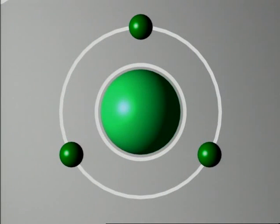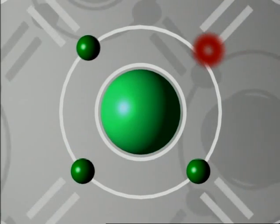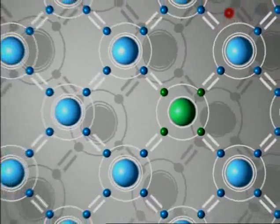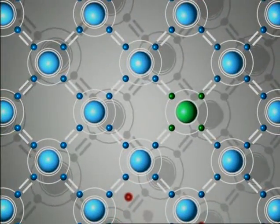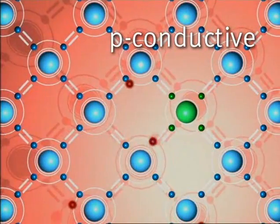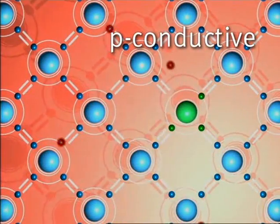Boron atoms, on the other hand, have only three outer electrons. When they are built into the silicon lattice, one silicon electron is missing. This creates electron holes. They move through the crystal like positively charged electricity particles. The material is positively charged or P-conductive.